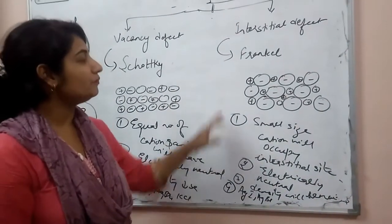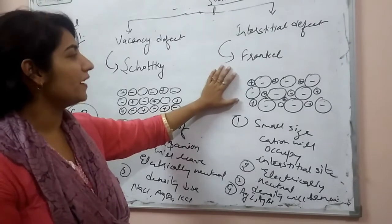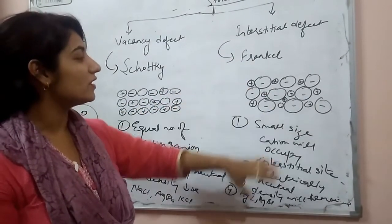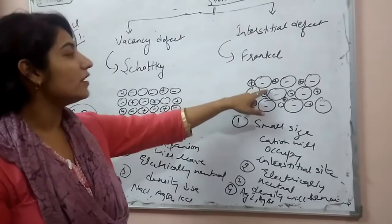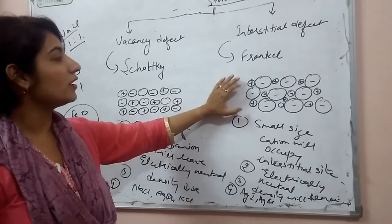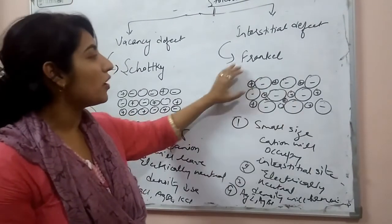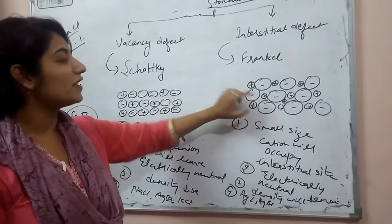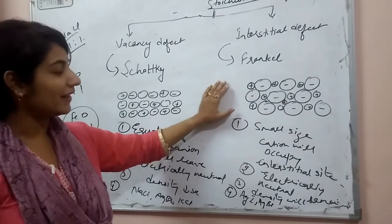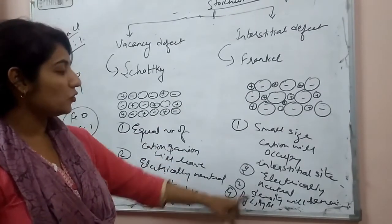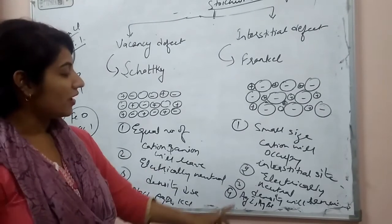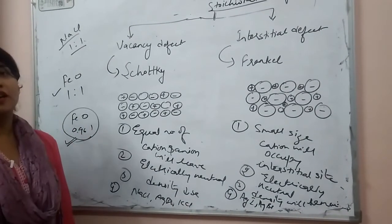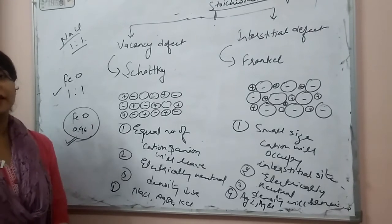To summarize Frenkel defect: a small-sized cation must be present to occupy the interstitial site, which is the void or gap present between the crystal lattice. The crystal will be electrically neutral, density will remain the same, and examples include AgI, AgBr, ZnS, etc.